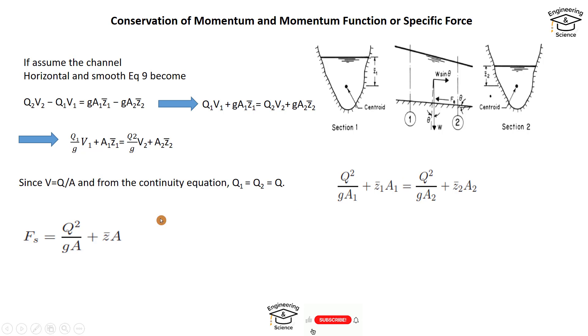Since the right side and left side are equal, we can write the equation as Fₛ = Q²/(gA) + z̄A, where Fₛ is the specific force or momentum function.